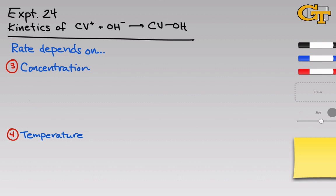There are two factors related to chemical reactions on which reaction rate depends in a really important way, and we're going to measure that dependence in this lab. The first is concentration. We capture the relation between reaction rate and concentration using the rate law — an equation that relates the reaction rate, negative d[CV]/dT, to the concentrations of the reacting species. We write this with a rate constant k multiplied by the concentrations of all reactants raised to some power. If any exponent is zero, that concentration dependence drops out.